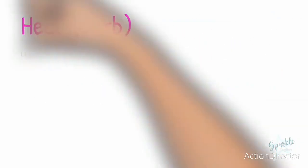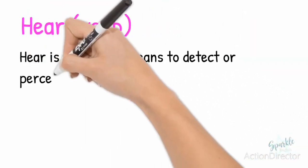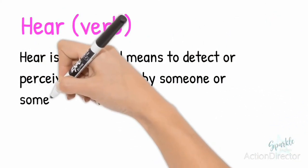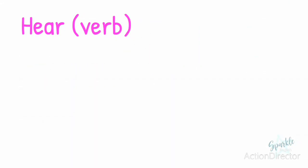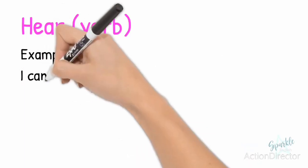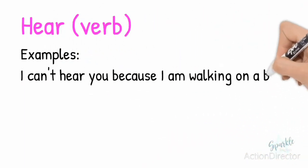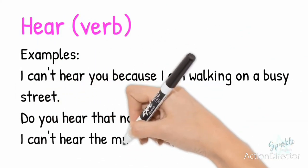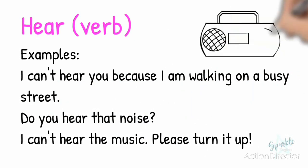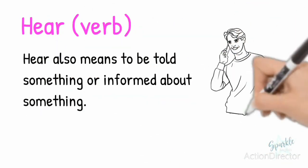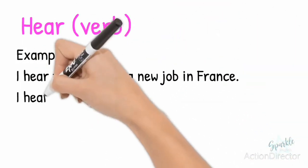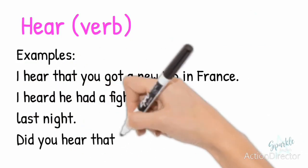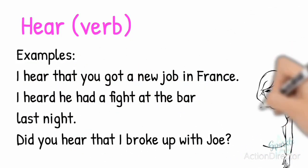Hear, spelled H-E-A-R, is a verb and means to detect or perceive sound made by someone or something with your ears. The past form of hear is heard. Let's look at some examples: I can't hear you because I am walking on a busy street. Do you hear that noise? I can't hear the music, please turn it up. Hear also means to be told something or informed about something: I hear that you got a new job in France. I heard he had a fight at the bar last night. Did you hear that I broke up with Joe?